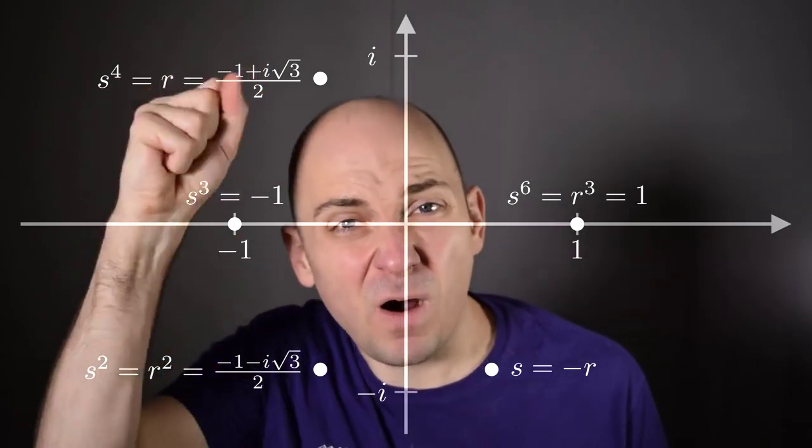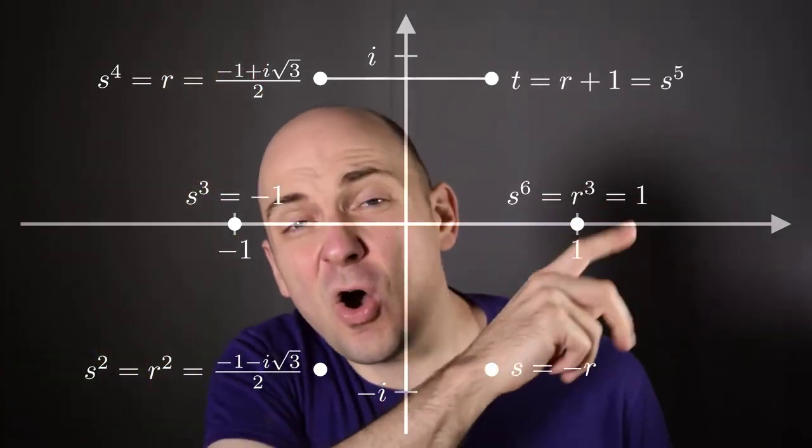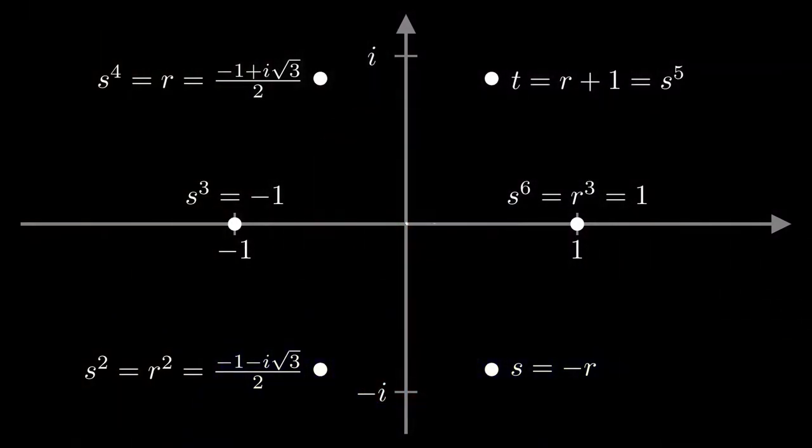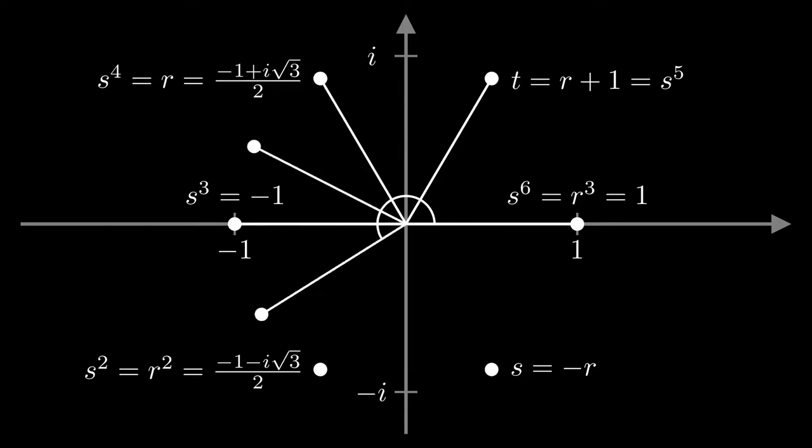Well, here's another thing I could do. I could take r and I could add one to it. I'll call that t. And t is also a sixth root of unity. And I can check that by computing t squared, t to the third, t to the fourth, t to the fifth, and finally noting that t to the sixth is equal to one.